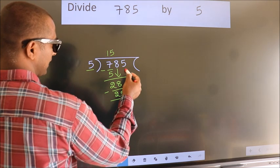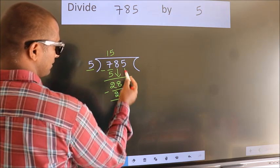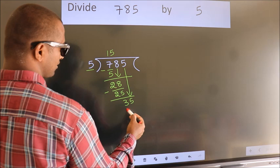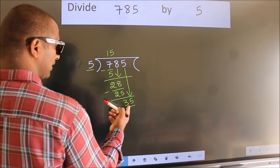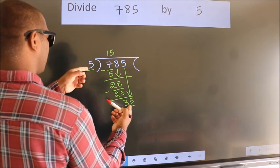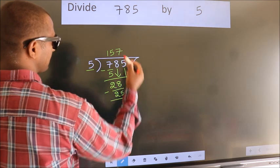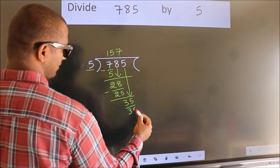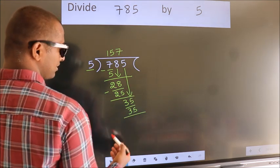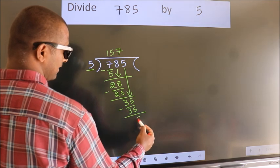After this, bring down the beside number. So, 5 down. So, 35. When do we get 35? In 5 table. 5 sevens, 35. Now, we subtract. We get 0.